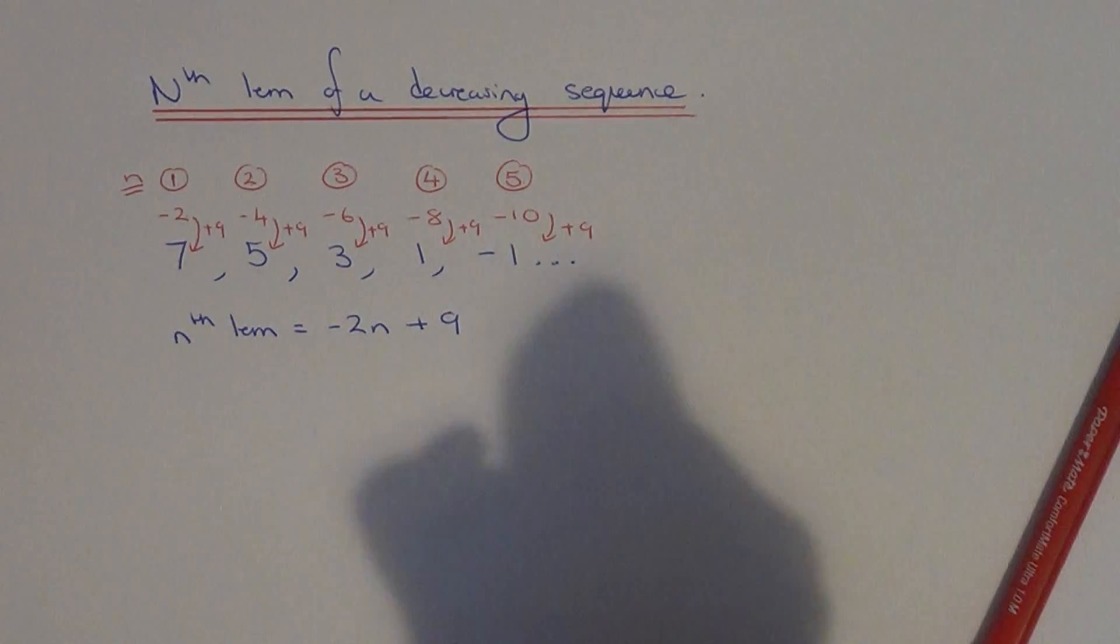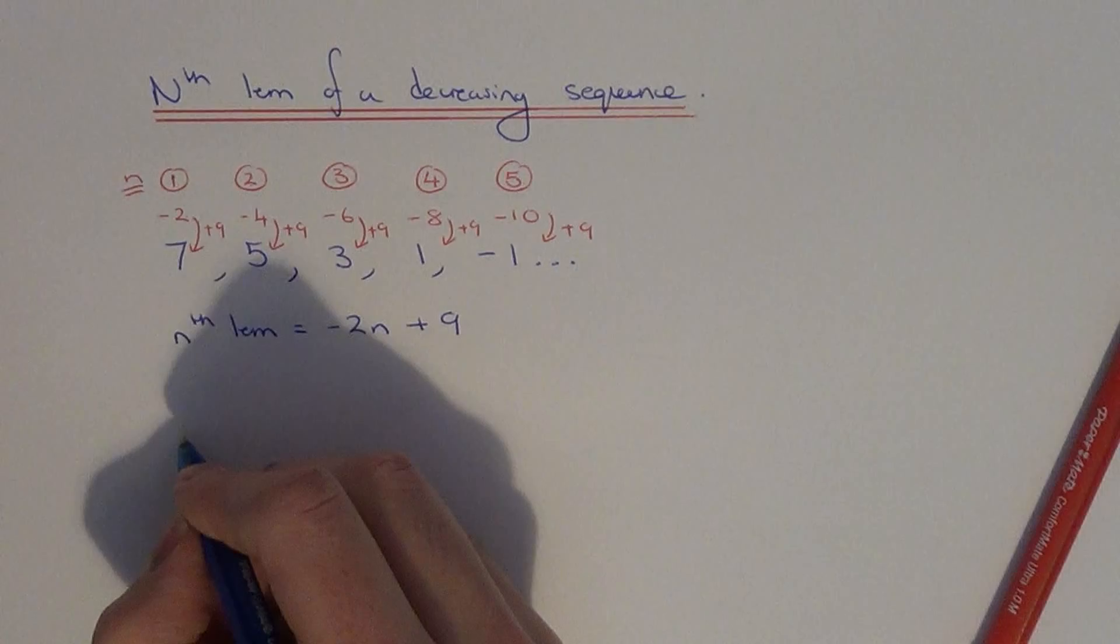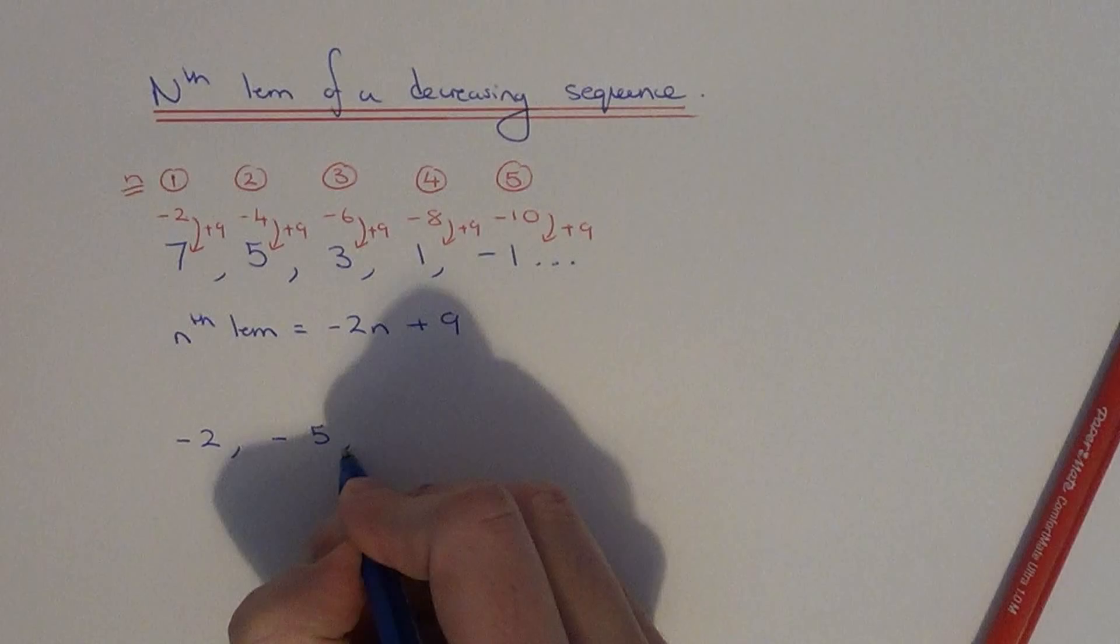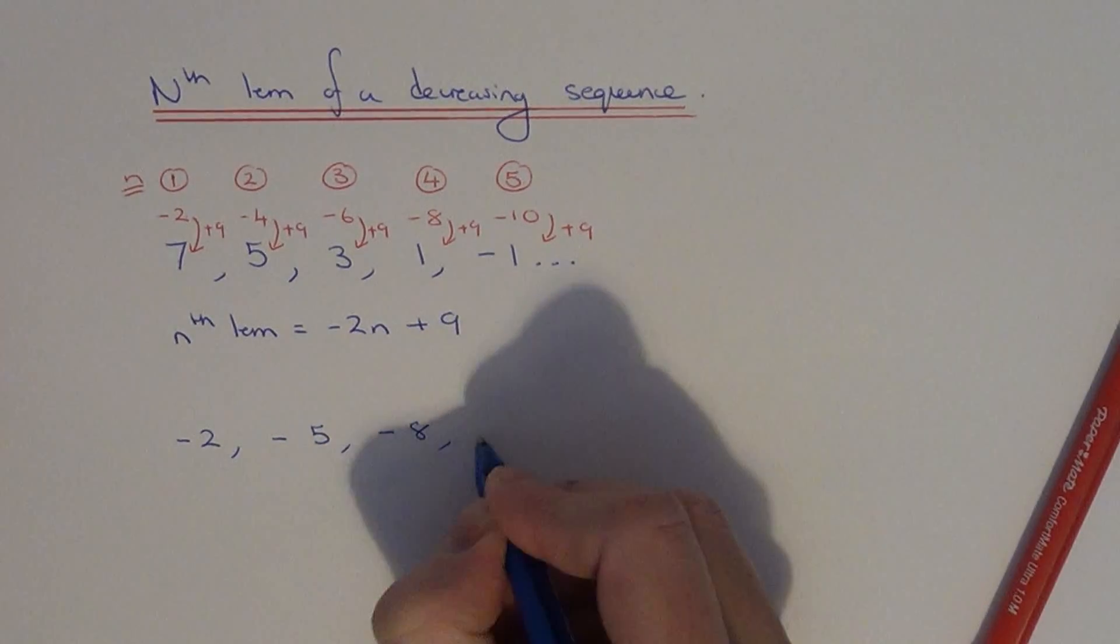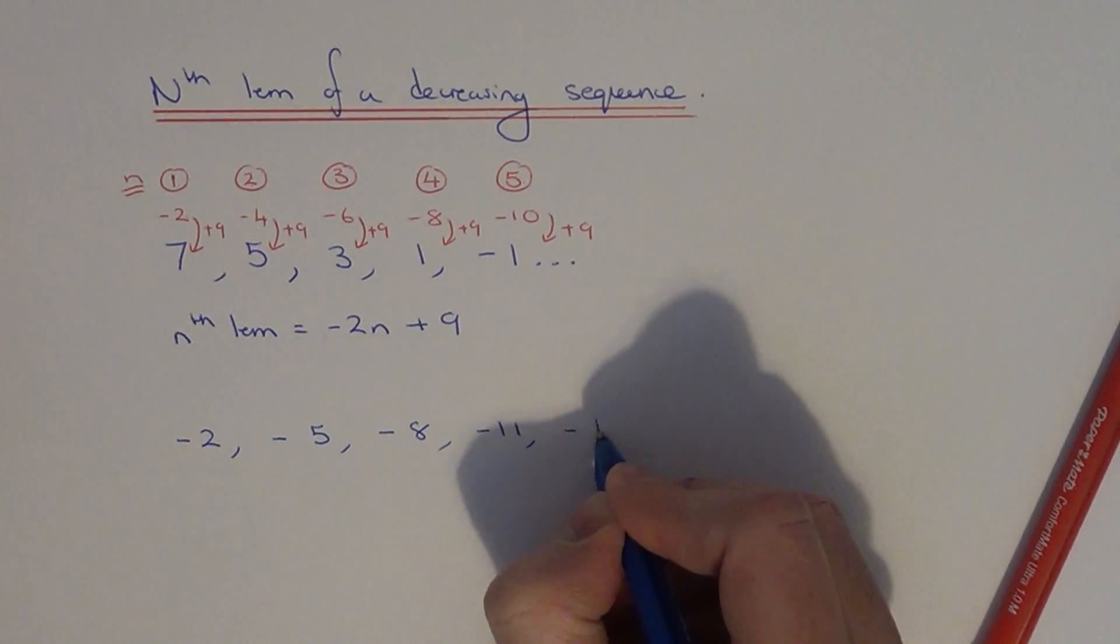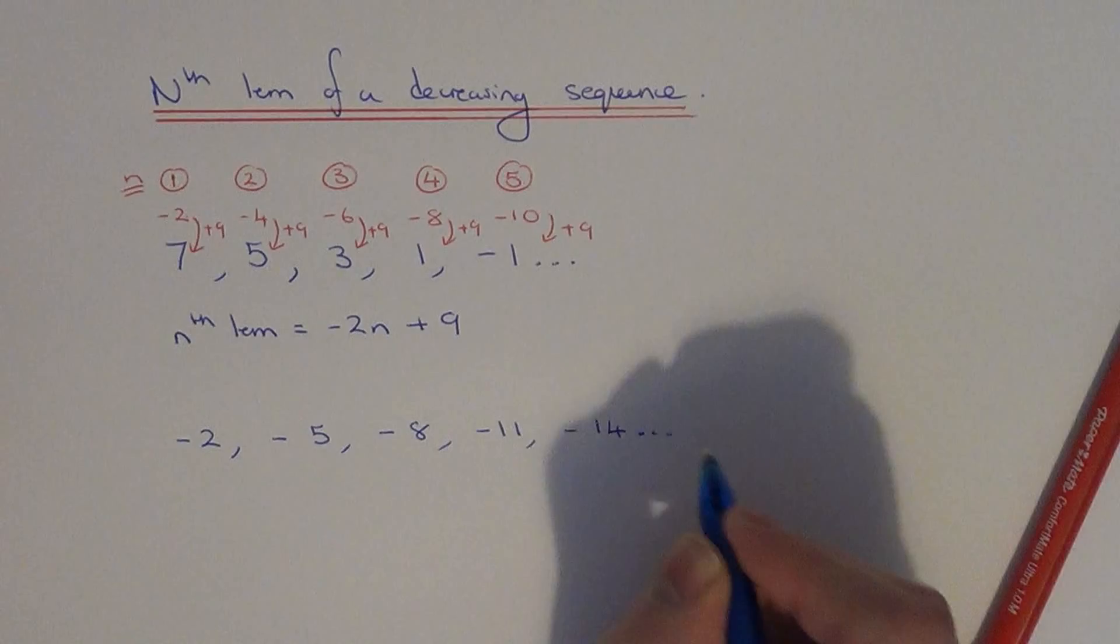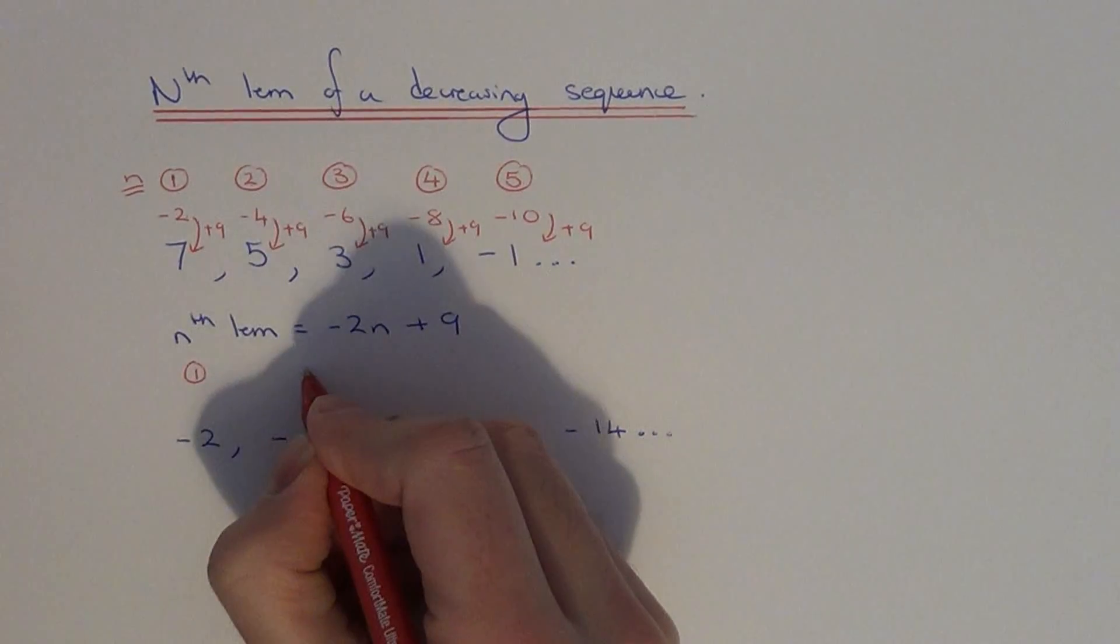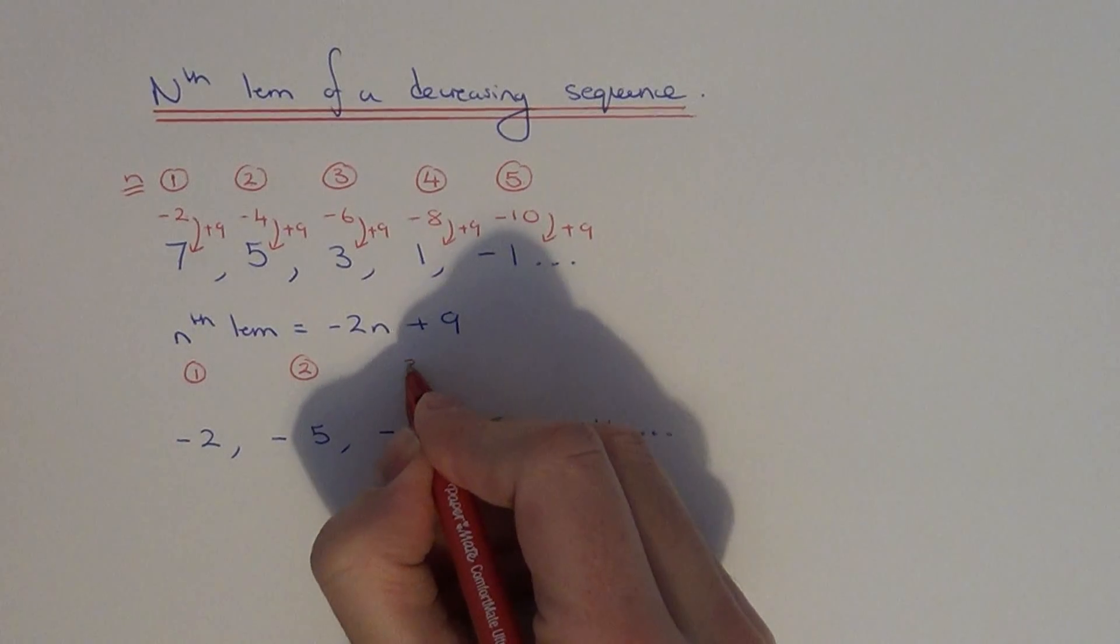Let's do one more example. So this time we've got a sequence which goes minus 2, minus 5, minus 8, minus 11, minus 14. So again, write the numbers 1 to 5 above the top of the sequence.